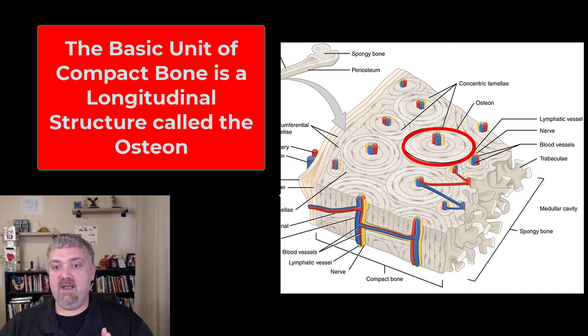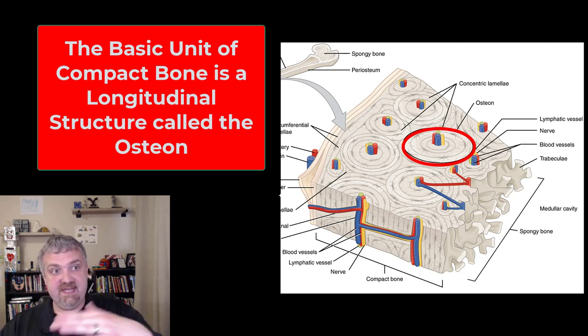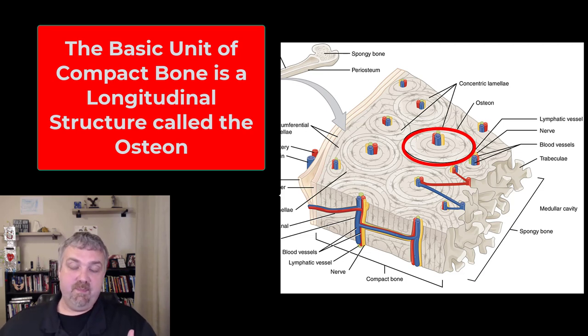In compact bone, the osteons are the functional unit. Notice that all the osteons in compact bone are running in one direction, which is why the bone is strong in that direction. A femur can withstand you jumping off a table and the shock that comes with that, but if a football helmet hits the side of the femur, it can snap relatively easily because that's not the direction that the osteons are lined up.